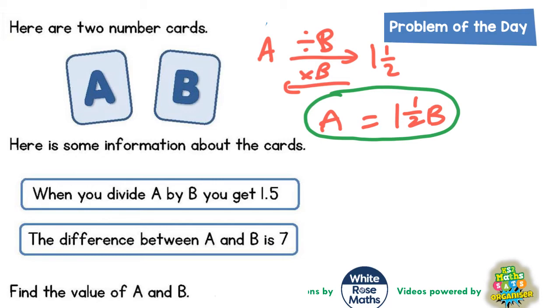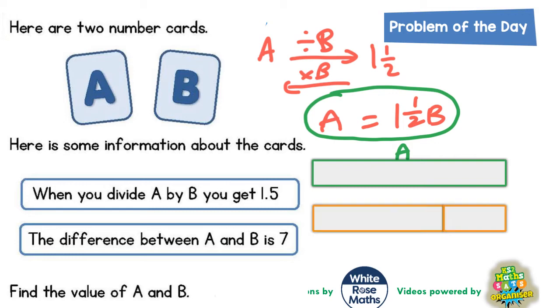And then from there we can start to draw a bar to represent A and B. So the first bar I'm going to draw is a bar to represent A. And A is equal to, or exactly the same as, 1.5 B's. So the orange bar is 1B plus an extra half of B, in other words 1.5 B's.